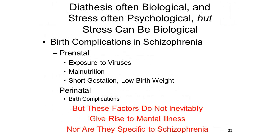So far, we've characterized the diathesis factor as biological in nature — a genetic predisposition, a bacterial infection, or an evolved preparedness to form certain kinds of associations. And I've characterized the stress factor as environmental or psychological in nature: exposure to communication deviance, a history of maltreatment, psychological stress, lack of social support, unpredictable and uncontrollable events, or fear conditioning whether through direct experience or vicarious experience.